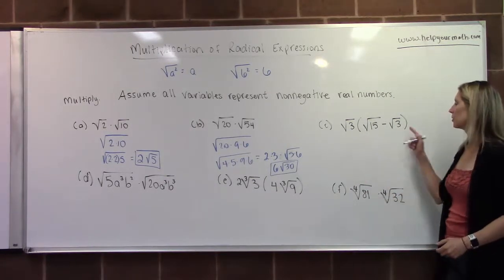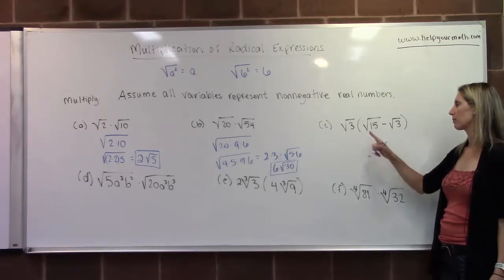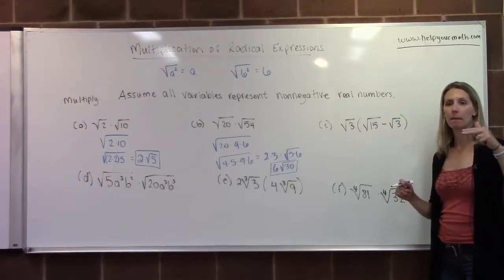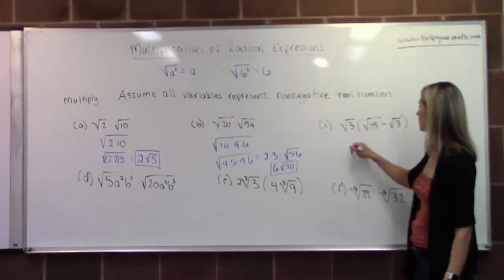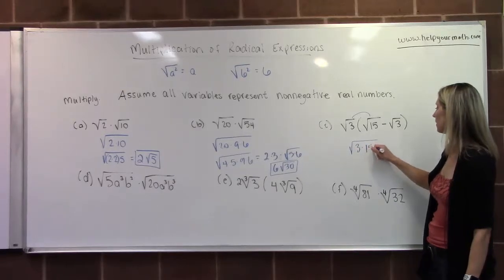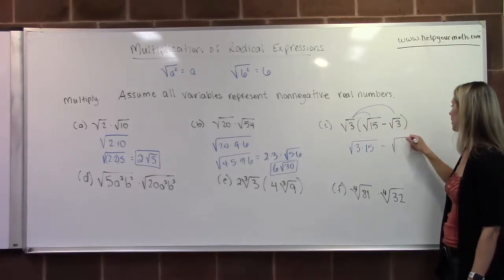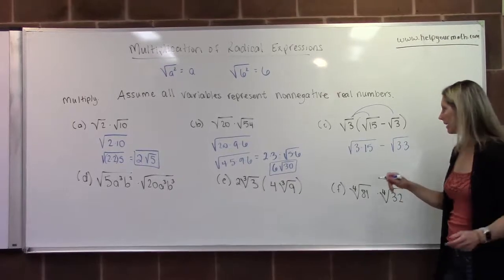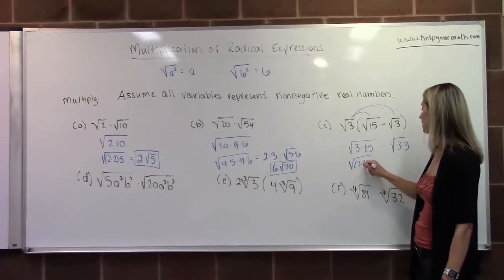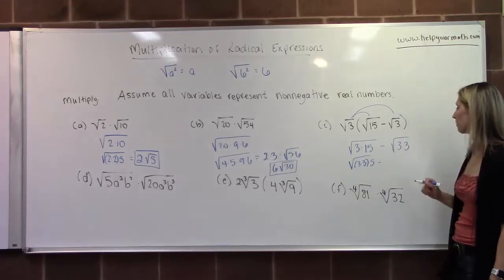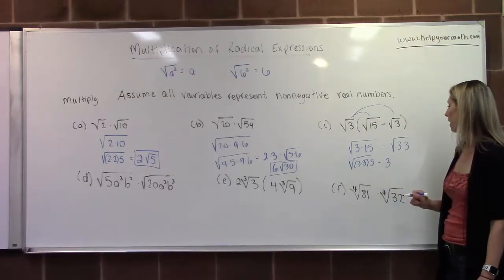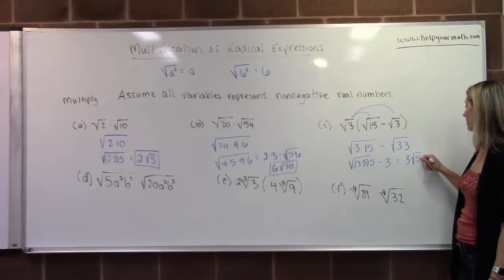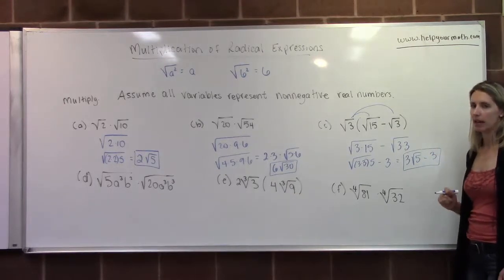Letter C is a little different — this time we use the distributive property. We distribute radical 3 to radical 15 and to radical 3, leaving the radicands multiplied and factored. Distributing gives 3 times 15 under the first radical and 3 times 3 under the second. For the first: 15 has a factor of 3, so that's 3 times 3 times 5, and the square root of 3 times 3 is 3, which pops out. In the second, 3 also pops out. We're left with 3 radical 5 minus 3. The only thing remaining under the radical is that radical 5.